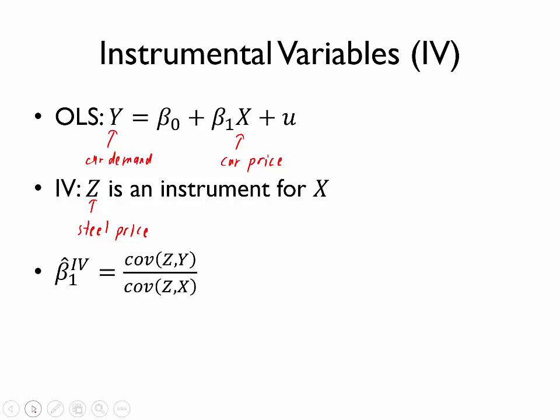So once we have selected that instrument and convinced ourselves that it is a valid instrument, we should be able to use the instrumental variables estimator, which is given by this formula. Let's take a moment to understand the intuition behind this formula. Notice that the numerator is the covariance of z and y — the instrument and the outcome.